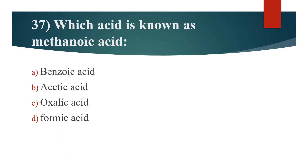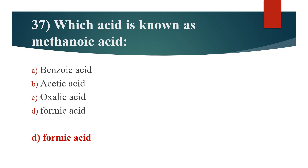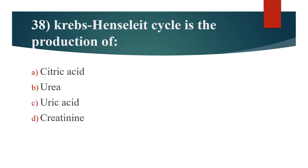Thirty-seventh question. Which acid is known as methanoic acid? Option A: Benzoic acid. Option B: Acetic acid. Option C: Oxalic acid. Option D: Formic acid. Answer is Option D: Formic acid.